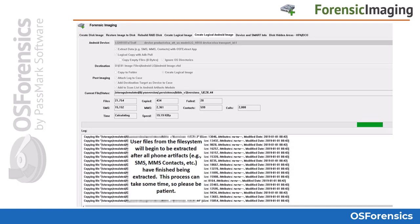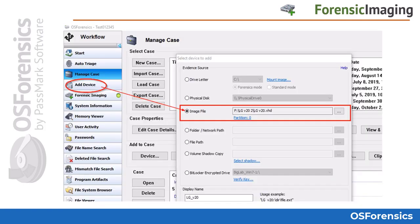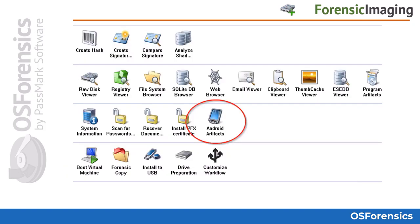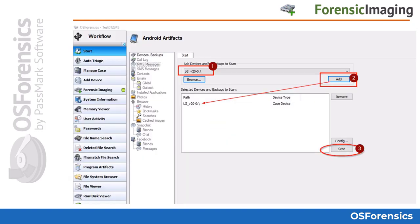Once the phone-specific artifacts are collected, OSF will begin acquiring the user files from the Android file system — depending on the amount of data, this process can be time-consuming. When completed, you will need to add the newly created logical image file to your case through the Add Device module. To analyze the SMS, MMS, and other phone-related artifacts from the image, go to the Android Artifacts module from the OS Forensics start screen. Add the Android logical image if not already populated and click Scan.